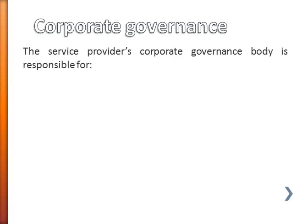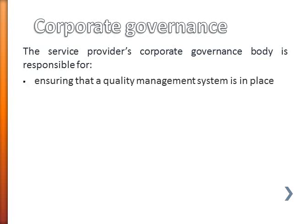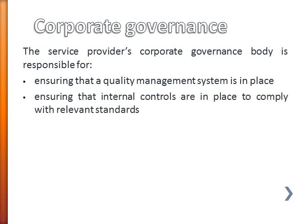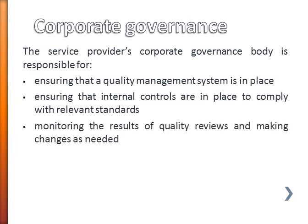Let's have a look now at the corporate governance end of things. The service provider's corporate governance body — the board, the management committee, the owner or directors — are responsible for some specific things when it comes to quality management. They need to make sure that there is a system of some sort in place and that there are internal controls — ways of knowing that compliance is happening and that the standards are being met.